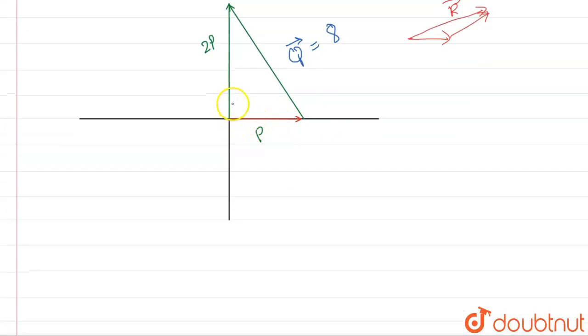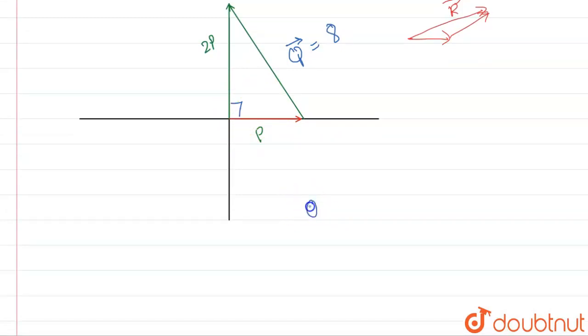Now what we'll do, you can clearly see this is 90 degrees, so we can use the Pythagorean theorem. That is Q squared, the magnitude of Q is equal to under root of 2P squared plus P squared. This under root will not come because we have written Q squared over there.